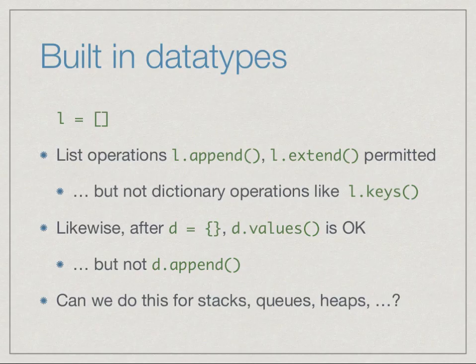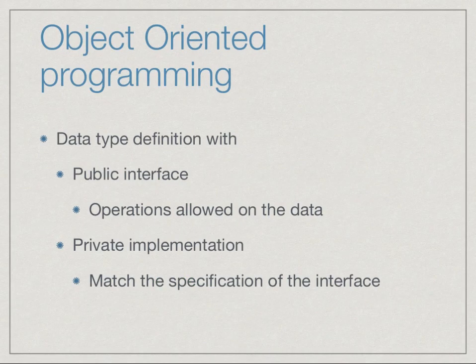So our question is that instead of using the built-in list for stacks, queues, and heaps and other data structures, can we also define a data type in which certain operations are permitted according to the type that we start with?